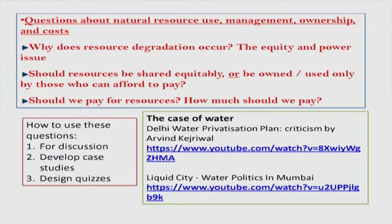Is resource degradation because some people are able to bribe their way into letting out untreated effluents into a water body? These are also social science issues which students should be alerted to, along with the earlier issue of the ability to pay. This is fundamentally related to the equity issue — some social scientists, economists, and policy makers argue that resources are not always priced according to their value and therefore there is a lot of wastage. On the other hand, resources like water are a basic necessity, so those who do not have the ability to pay must also have access.